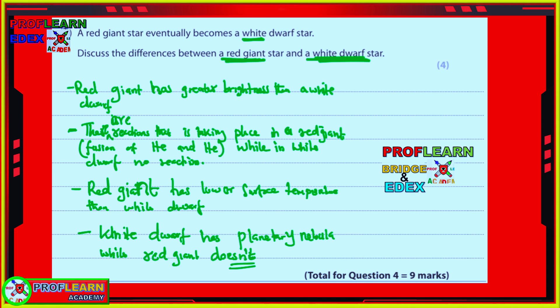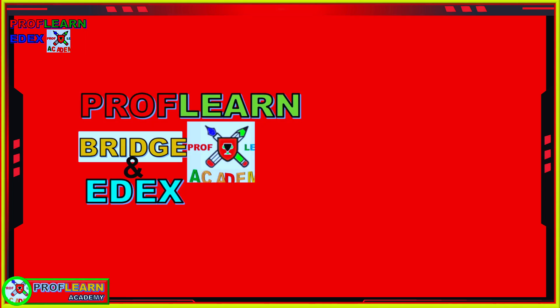A white dwarf is surrounded by a planetary nebula, because as a star evolves from a red giant it ejects its outer layers to form a planetary nebula around the white dwarf. We have come to the end of this part. I wish you the best of luck, and if you are new to ProfLearn, consider subscribing so I can notify you when I upload the next tutorial.